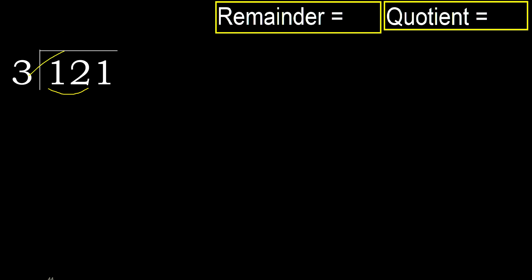3 multiplied by which number is nearest to 12 but not greater? 3 multiplied by 5 is 15 — 15 is greater. Multiply by 4: 3 multiplied by 4 is 12, which is not greater.